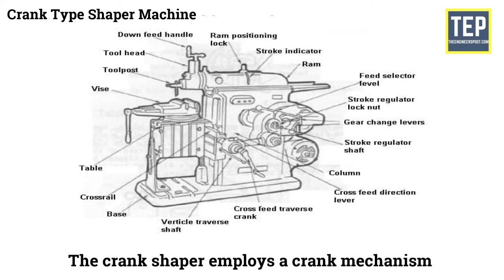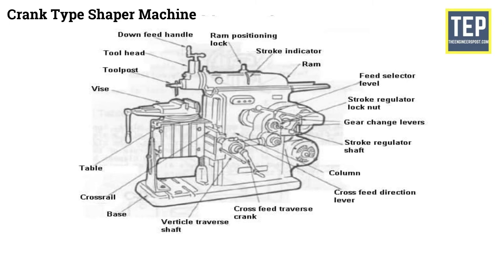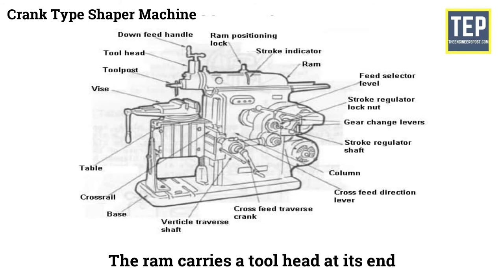The Crank Shaper employs a crank mechanism to change the circular motion of a large gear called bull gear. It uses a crank mechanism to convert the circular motion of the bull gear into reciprocating motion of the RAM. The RAM carries a tool head at its end and provides the cutting action.